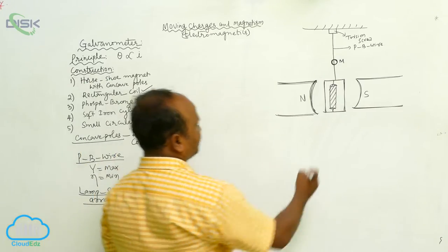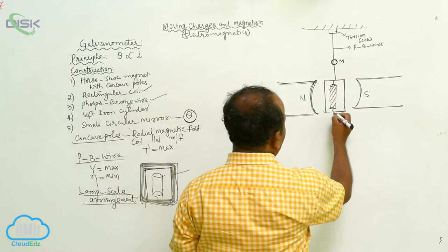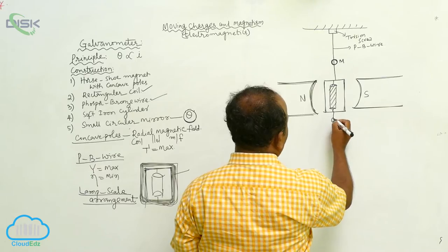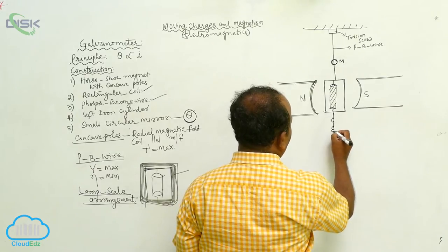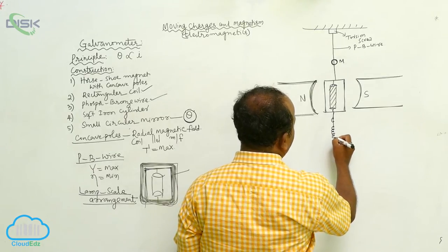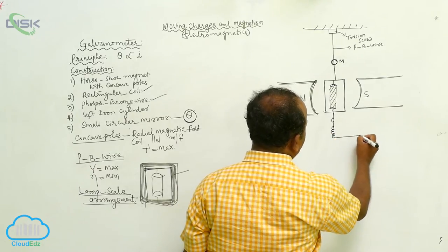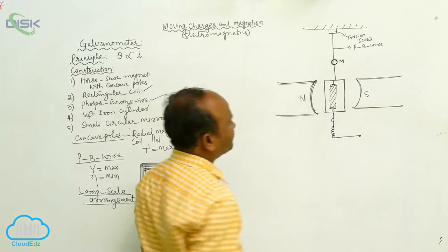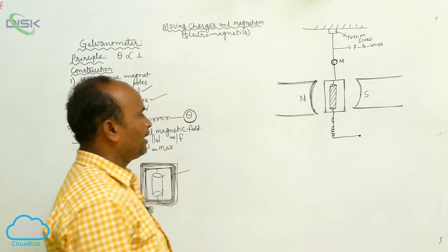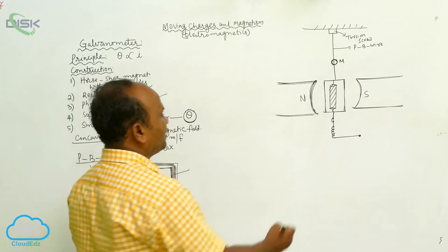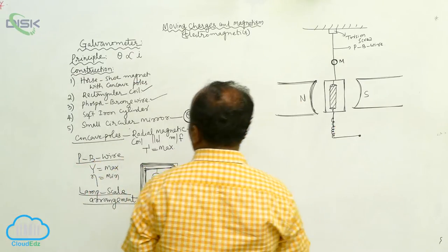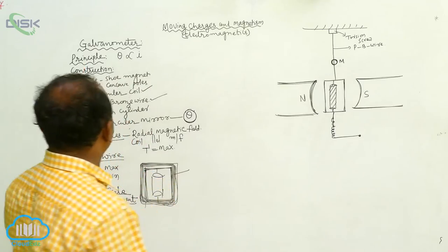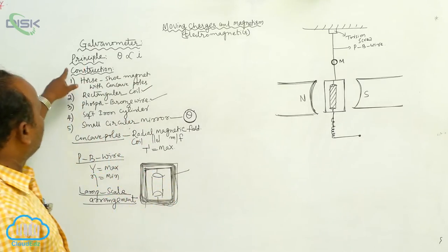Additionally, a phosphor bronze spring is attached here. This completes the construction of the moving coil galvanometer.